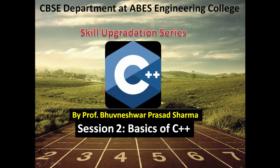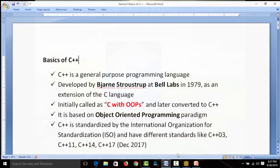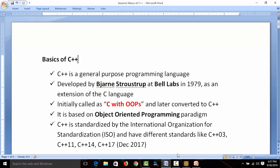If we talk about the basics, we are going to cover the historical part of C++. C++ is a general-purpose programming language that can be used to build a variety of software: system software, application software, databases, and other kinds of software. It was developed by Bjarne Stroustrup at Bell Labs in 1979 as an extension of C language. C++ was initially called C with OOPs — that's object-oriented programming system — and was later called C++.